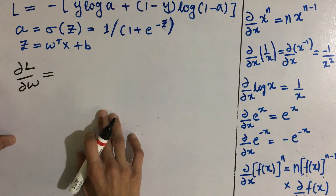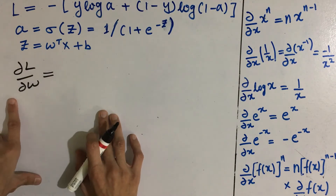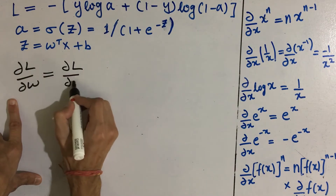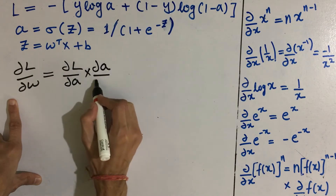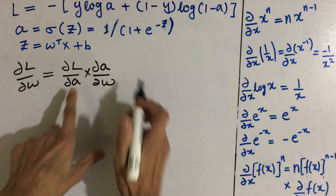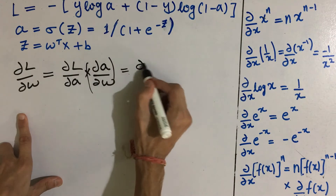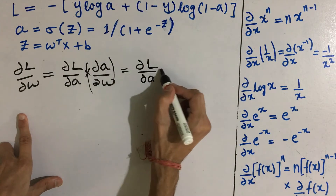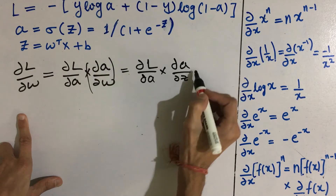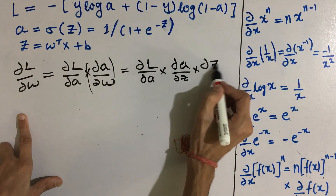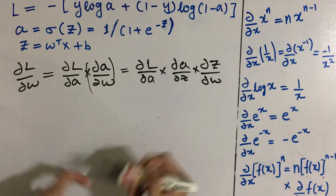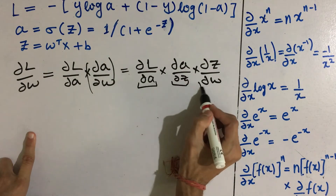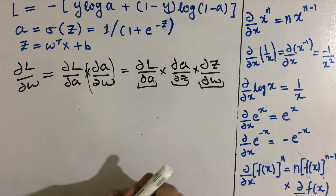There is something called the chain rule in derivatives, which says that to compute del l by del w, we can compute del l by del a first and multiply it by del a by del w. We can also expand this as del l by del a, multiplied by del a by del z, multiplied by del z by del w. We will compute all three of these and then multiply them to get our del l by del w.